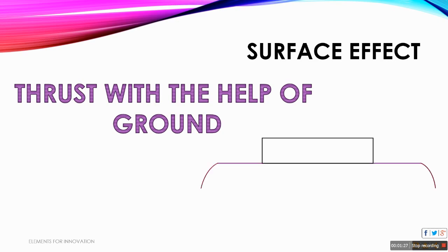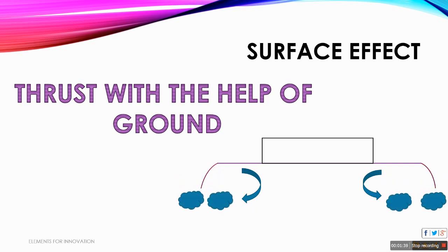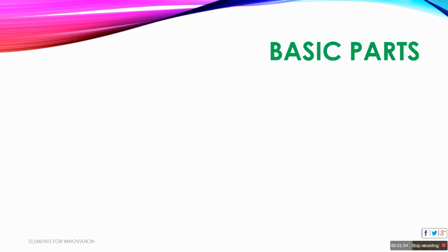Taking the upper duct to be the propeller: the propeller throws air downward. When it throws air downward, the air strikes the ground and after striking the ground, due to Newton's laws, an upward thrust is generated over the hovercraft, and that thrust is responsible for moving the hovercraft at a certain height.